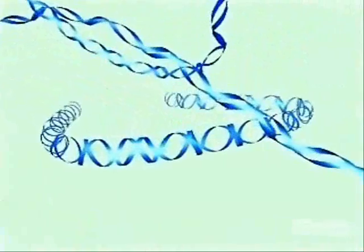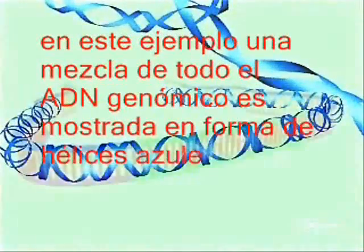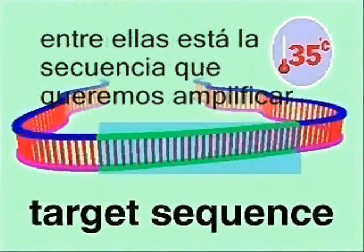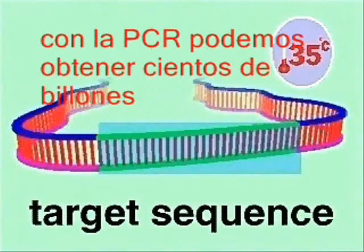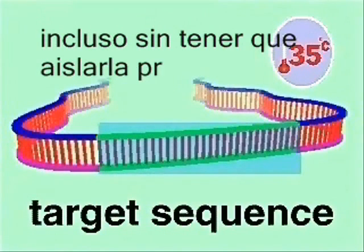In this example, a mixture of genomic DNA molecules, shown as blue ribbons, contains the sequence we wish to amplify, called the target sequence, shown in green. With PCR, we can make billions of copies of the target sequence without having to purify it beforehand.